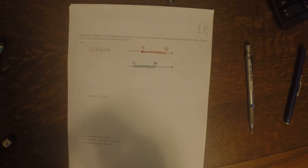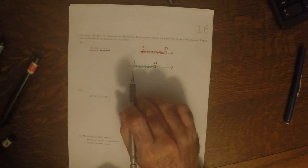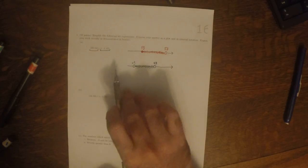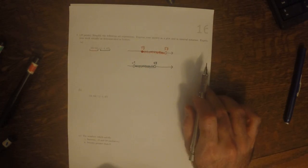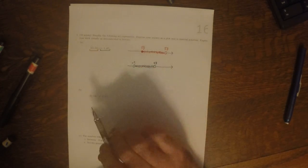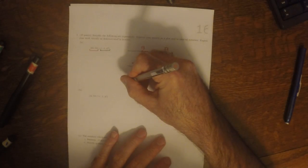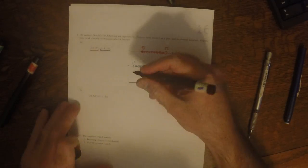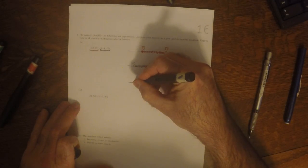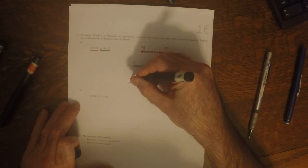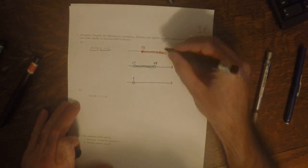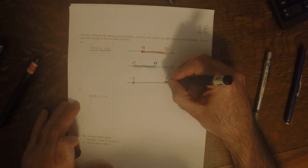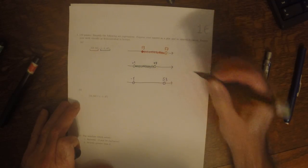Now we want to compute the union of those two sets, which is to say we want the set of all numbers that are either green or red or both. That set looks like this. The smallest is negative 1 open, the largest is 53 open.